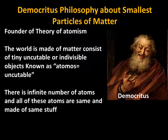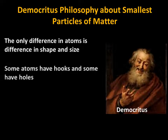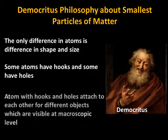According to Democritus, there is an infinite number of atoms and all these atoms are the same, made up of the same stuff. The only difference between atoms is a difference in shape and size. So according to Democritus, atoms are made up of the same materials but have different shapes and sizes.